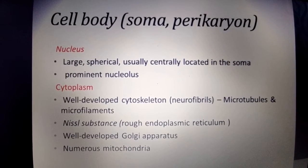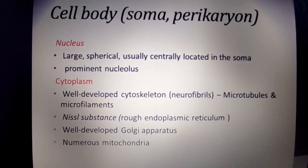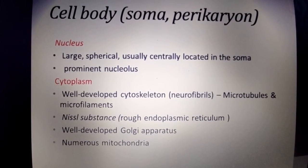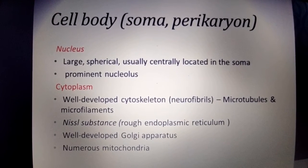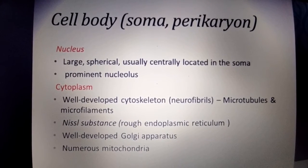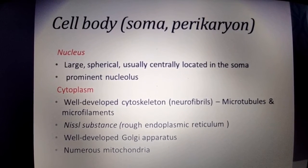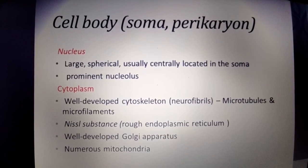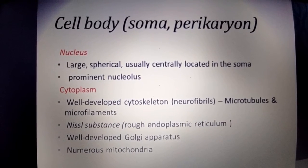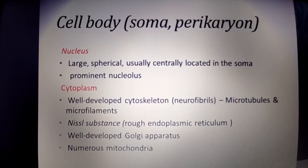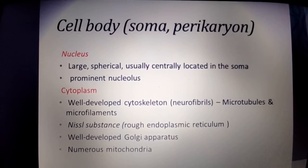In the cell body, the nucleus is large, spherical, and centrally located with a prominent nucleolus. There is a well-developed cytoskeleton — microtubules and microfilaments. The cytoplasm contains Nissl substance, a well-developed Golgi apparatus, and numerous mitochondria.